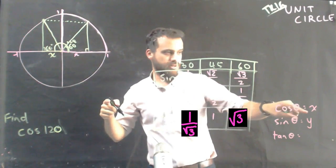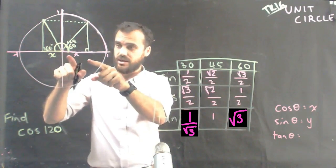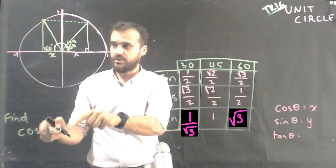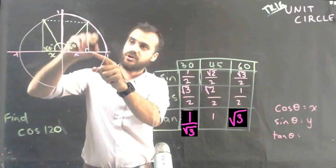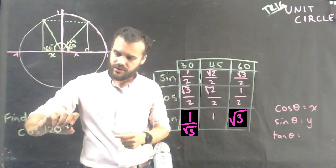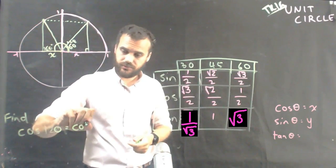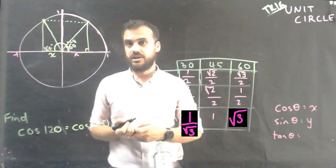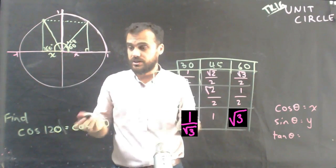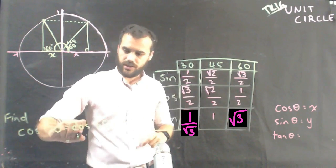And if cosθ is equal to the x value, then we know that cosθ of 120, the thing that we're finding, is equal to cosθ of this triangle because they're symmetrical. So cos 120 is actually equal to cos 60. And cos 60 is simple because we know cos 60. Cos 60, one half.